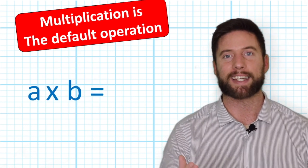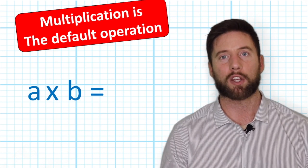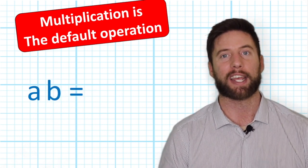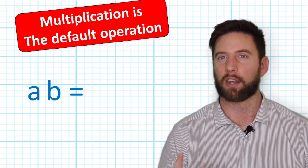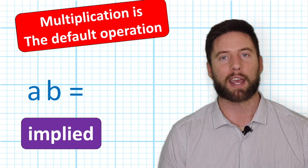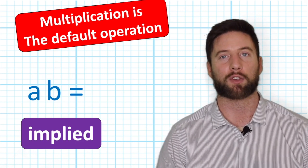For example, instead of writing A times B, we can just write AB, and we know that multiplication is implied. Of course, in this example, we can't actually multiply A and B until we know what values they are.